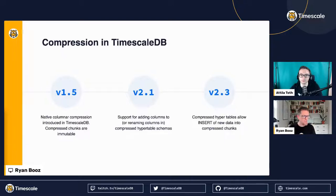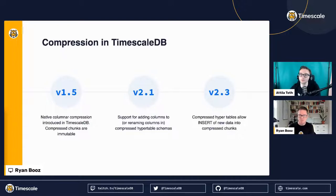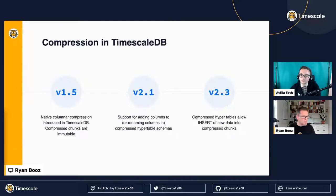The ultimate goal is to take something that never existed in Postgres — the ability to do column-store data, basically taking your data and turning it into a column store, which allows good compression and querying abilities around arrays of items — and allow them to be mutable. We're making small steps as we go.